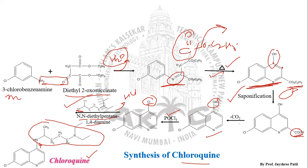The 4-hydroxy moiety is then chlorinated using POCl₃. This chlorinated intermediate is condensed with the side chain N,N-diethylpentane-1,4-diamine, and we obtain the target molecule: chloroquine.